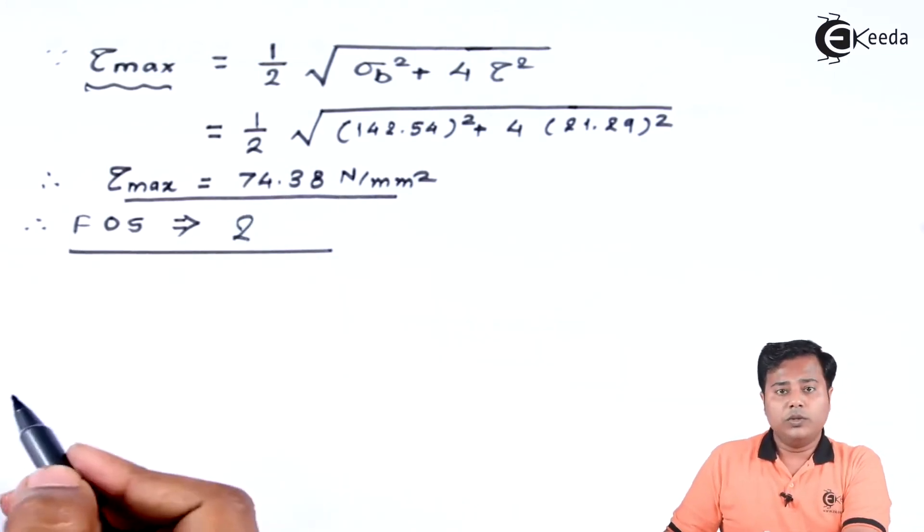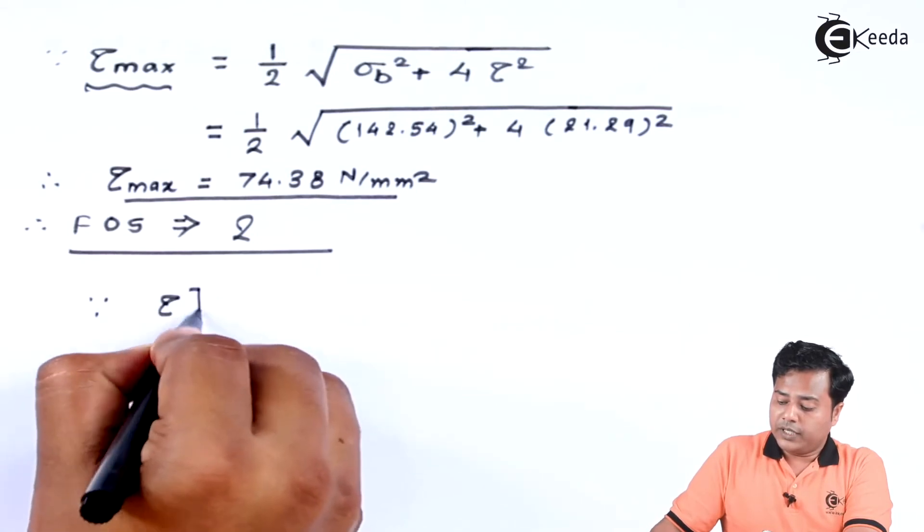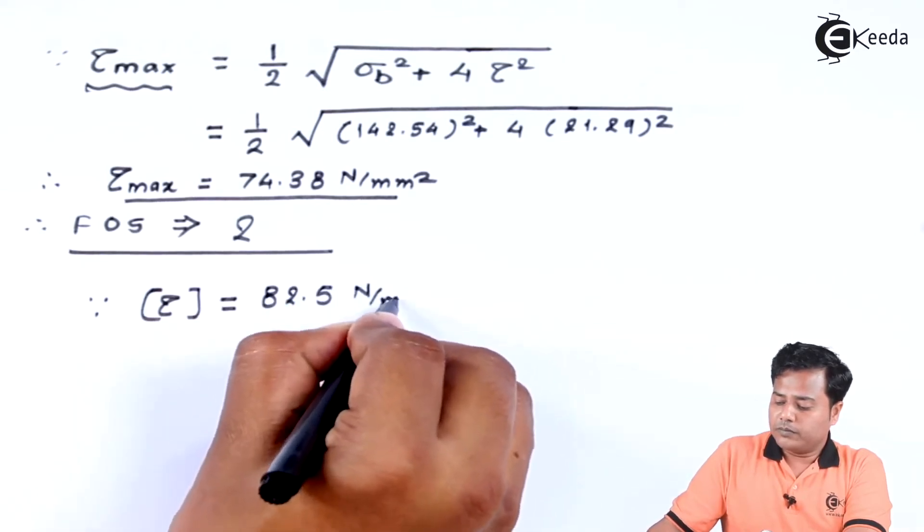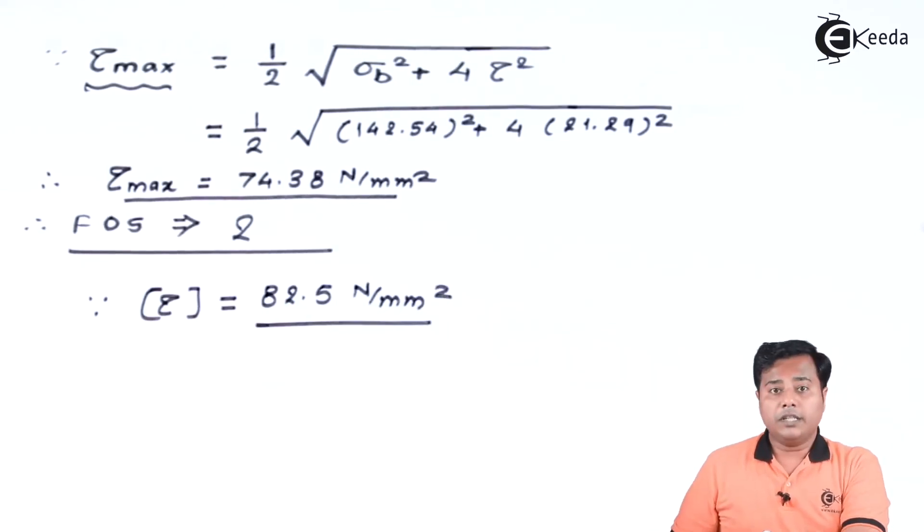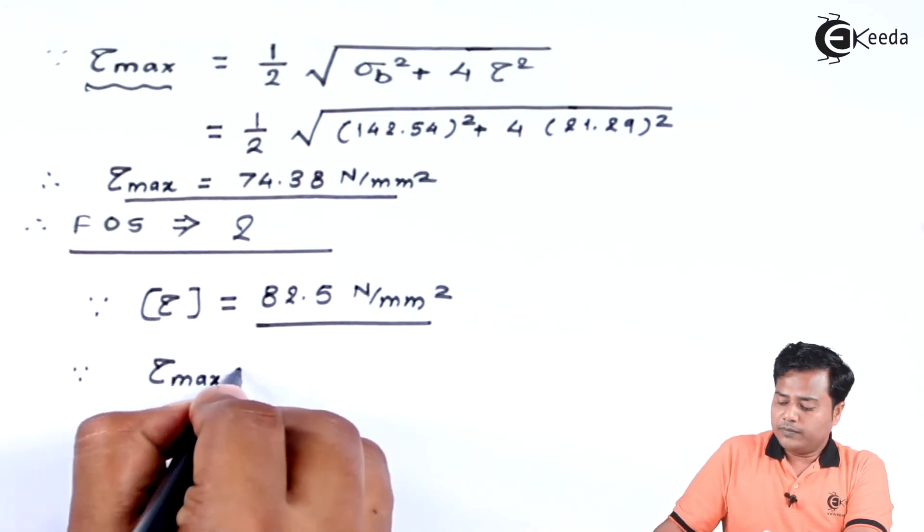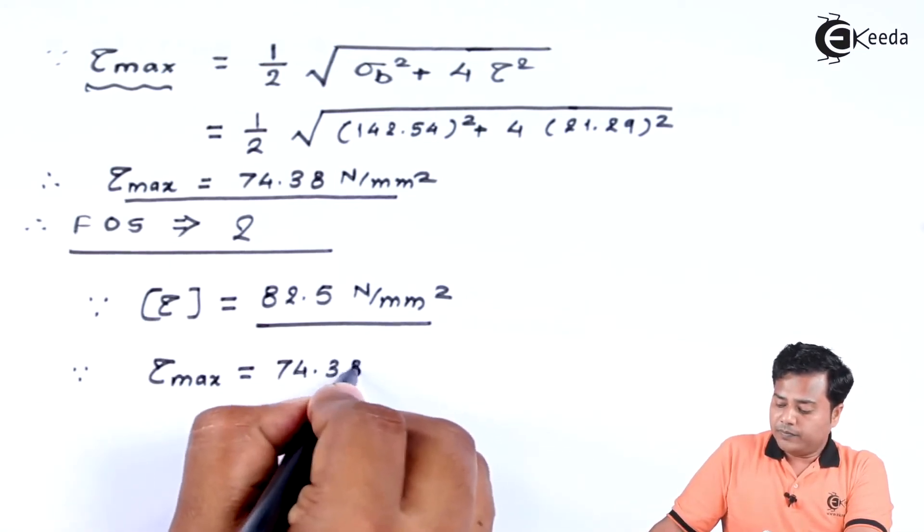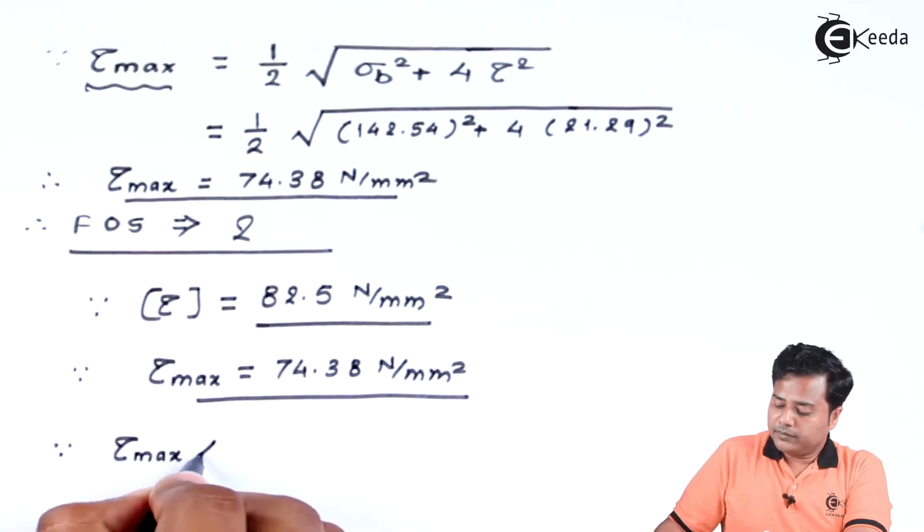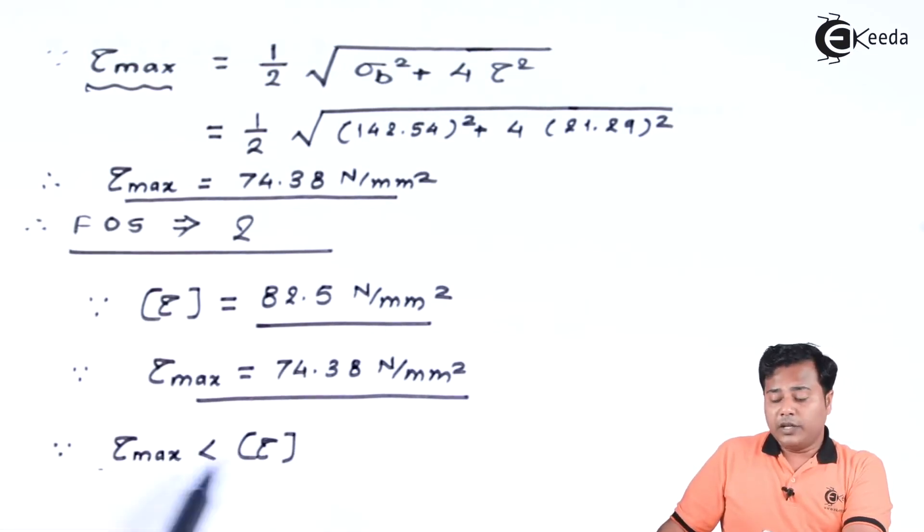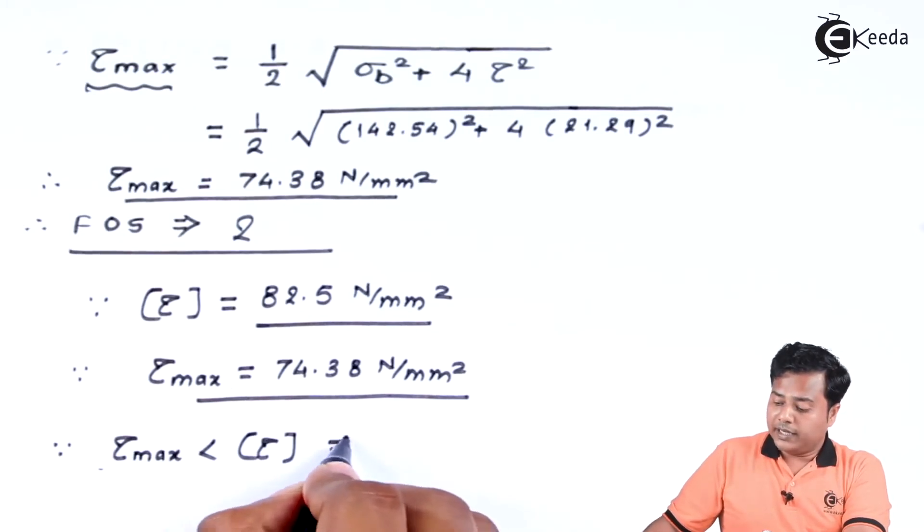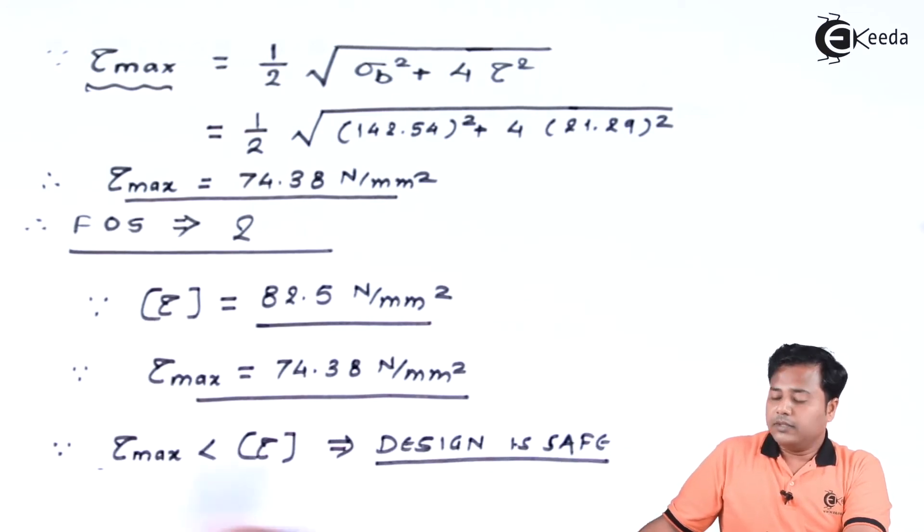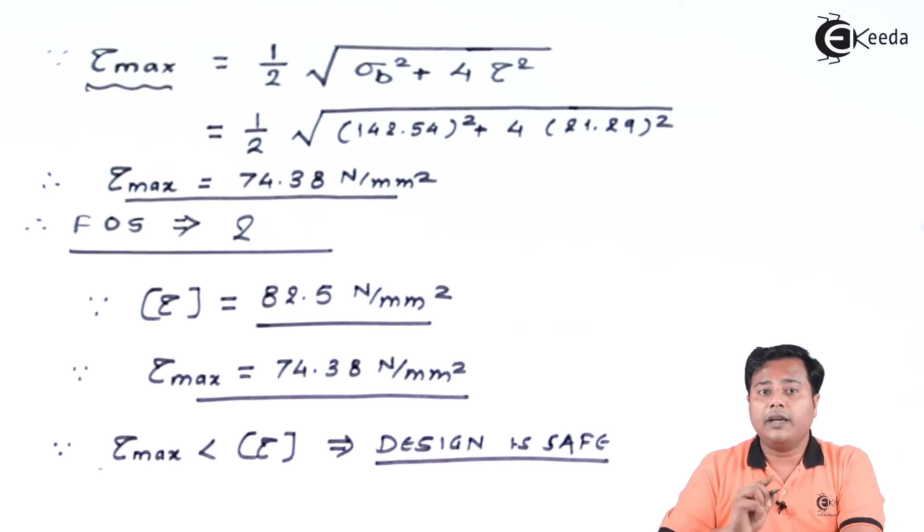Now we have to compare this value with the allowable value of power screw. We know that the factor of safety is given as 2, based on which we have already found out that the allowable shear stress is equal to 89.5 N/mm². The induced value is 74.38 Newton per millimeter square. Since the existing value is smaller than the allowable value, we can say that design is safe as far as cross section AA is concerned.